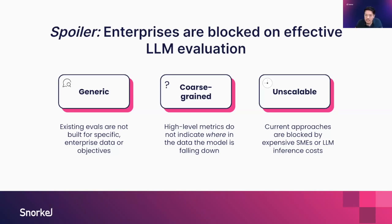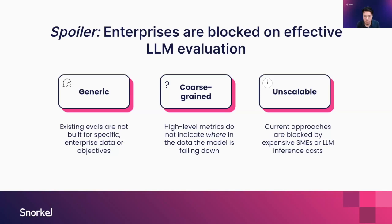Third, a lot of the eval approaches today are really hard to scale. They're either blocked by expensive subject matter experts — the doctors, underwriters, financial analysts — who have the knowledge of what good looks like, spending time in Excel manually going through these approaches in a way that isn't scalable. And if you're using another LLM to evaluate your model, sometimes these approaches see really high costs in terms of per-token costs, especially if you're running this through CI on a per-commit or weekly basis.